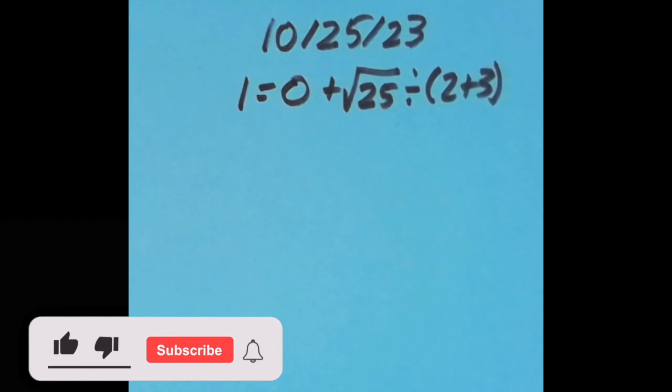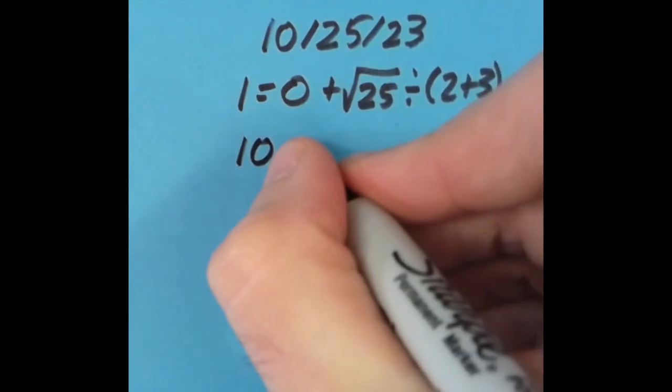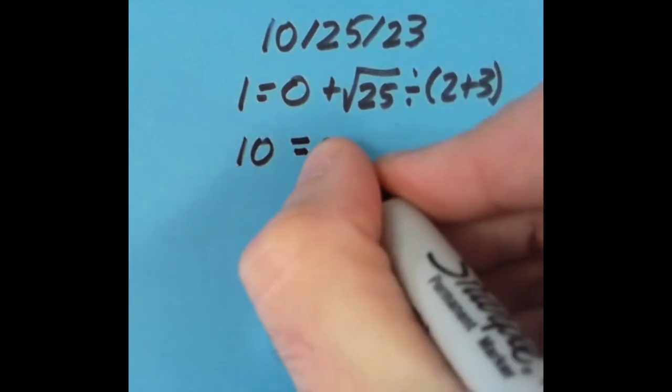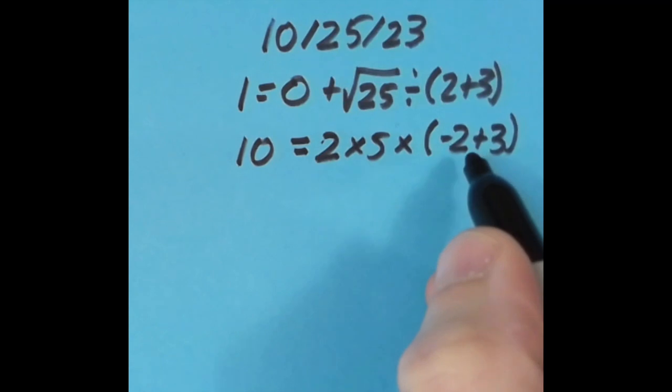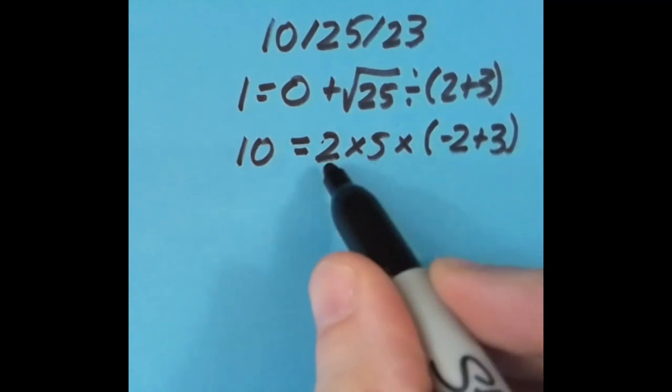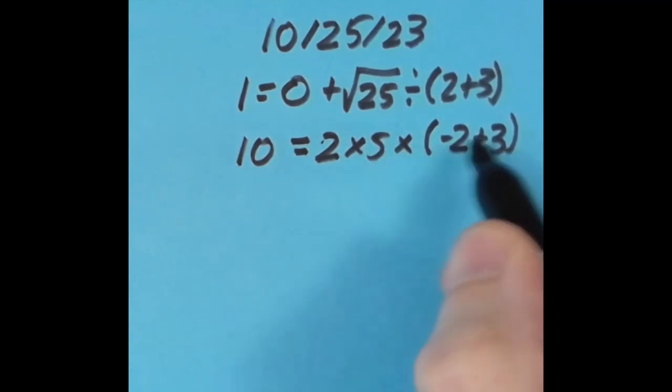With the equal sign over a spot to the right, I said 10 equals 2 times 5 times—again I'm using parentheses here so I can do this addition first—negative 2 plus 3, which is 1. So 2 times 5 is 10, and 10 times 1 is just 10.